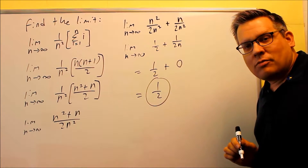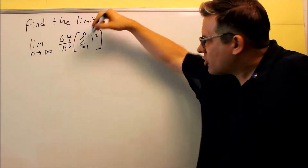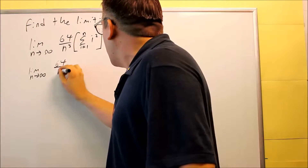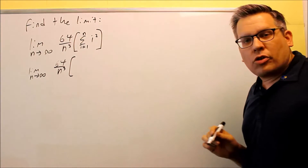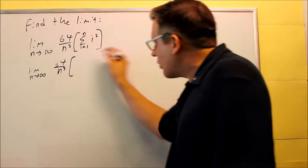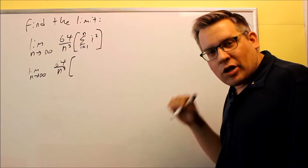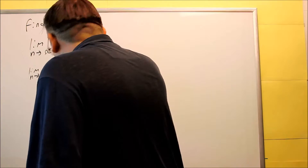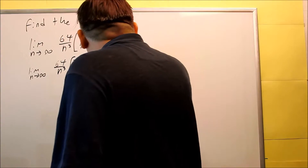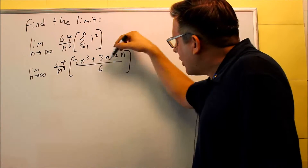Now let's take a look at another limit example. This time I have an i squared on the inside, so again the first thing you want to do is put a formula in for that so we can calculate the limit since we'll have an n in it. So 64 over n cubed. There are two versions of that formula — n times n plus 1 times 2n plus 1 — but I want to use the expanded version since I'll have to expand it anyway. So we put in 2n cubed plus 3n squared plus n, all over 6.